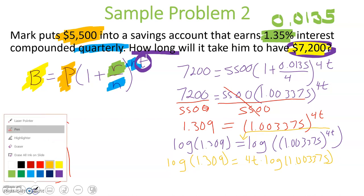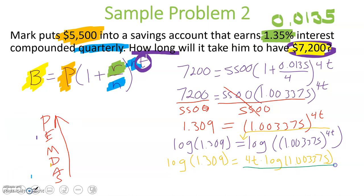Now remember, we want to get T by itself, so let's go ahead and divide everything that's next to the T that's being multiplied. We're going to divide by 4 times log of 1.003375. We'll do that on both sides of this equation.